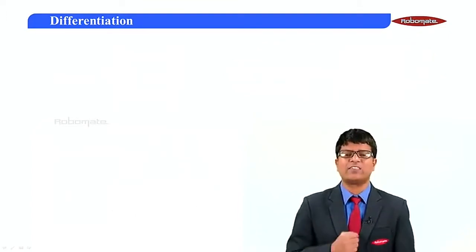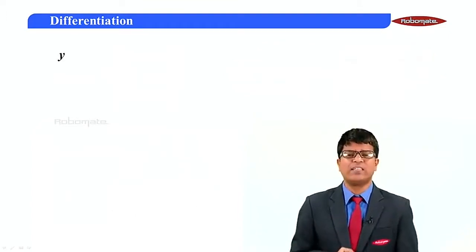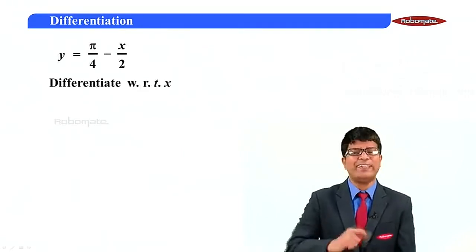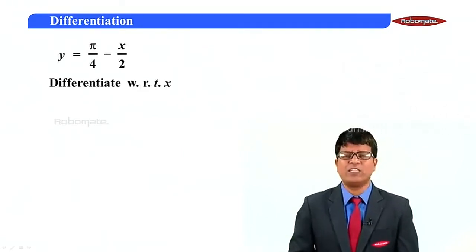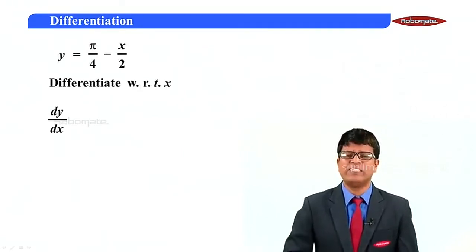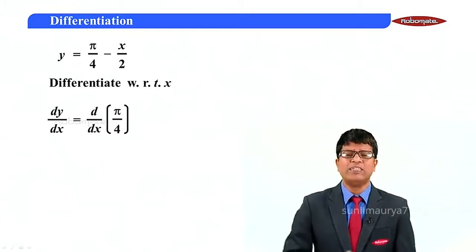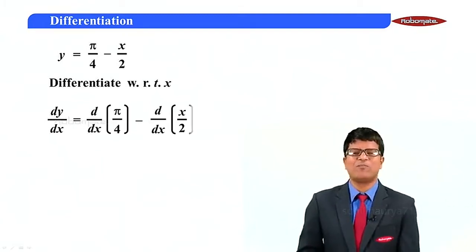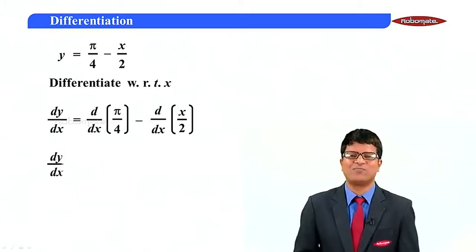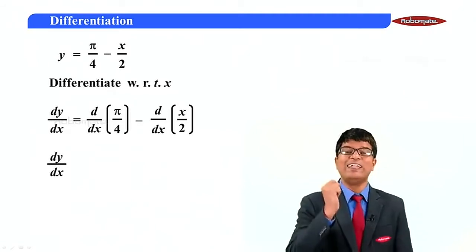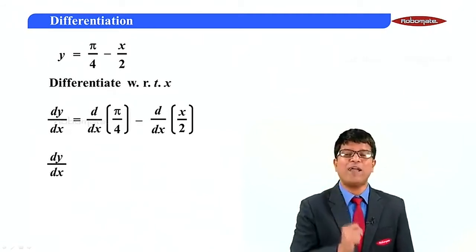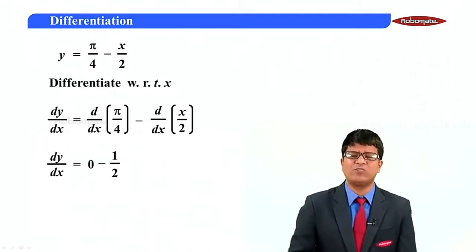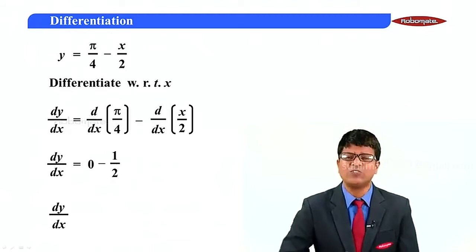So y equals π/4 minus x/2. Differentiating with respect to x: dy/dx equals d/dx of (π/4) minus d/dx of (x/2). The derivative of π/4 is 0 and the derivative of x/2 is one half. Therefore dy/dx equals minus one half.